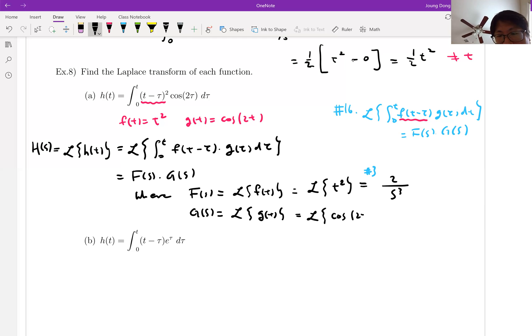What about this? Laplace transform of g(t), which is cosine. Look at number six, and that is equal to s over s squared plus two squared.